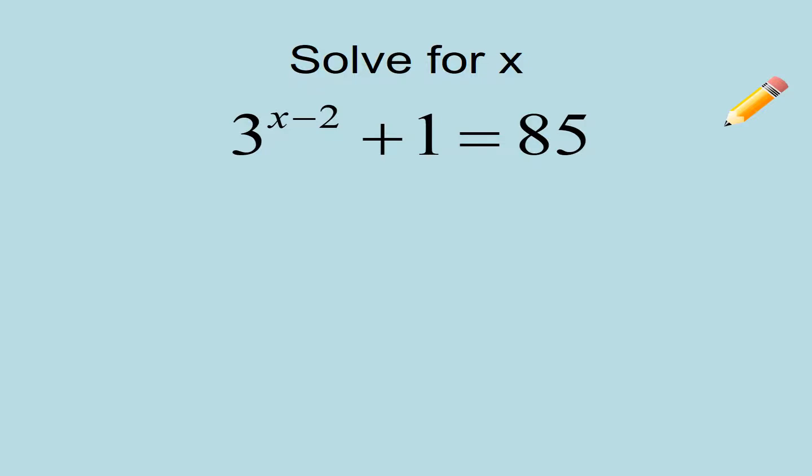Alright, last problem for today. Let's subtract 1 in order to get that 3 to the x minus 2 isolated by itself on the left-hand side. 85 minus 1 is 84. And so now that we have this exponent, this number getting raised to an exponent isolated, change it to logarithmic form. So that's going to be log base 3 of 84 is equal to x minus 2.